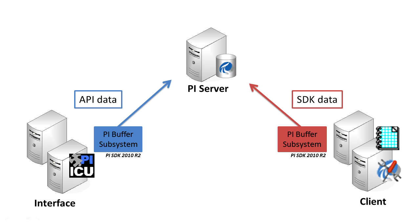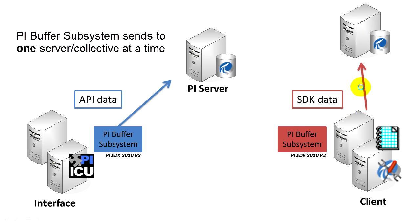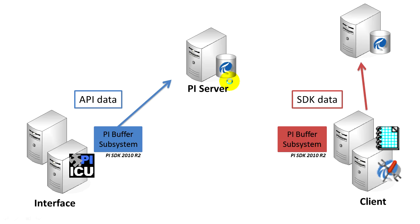When you're considering SDK buffering, there are a couple of limitations to note. First, if you have a client node sending to a PI Server and you want to send to a second PI Server, remember that if you switch over, the PI Buffer subsystem won't buffer data to the new server. It can only be configured to send to a single server at a time, and if you want it to buffer to a second one, you'll need to reconfigure and restart the PI Buffer subsystem. It can only buffer to one server or collective at a time.